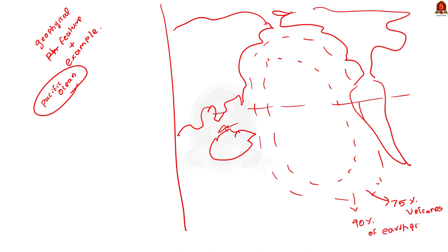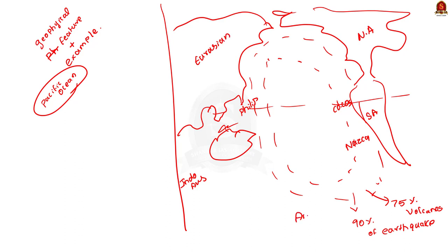The main reason for this is the interaction of the Pacific tectonic plate with various tectonic plates like the Indo-Australian plate, Philippines plate, Eurasian plate, North American plate, South American plate, Juan de Fuca plate, Cocos plate, Nazca plate, and Antarctic plate. These interactions are the reason for volcanoes, earthquakes, and other geophysical features of this region.